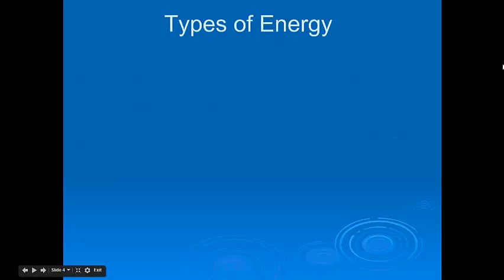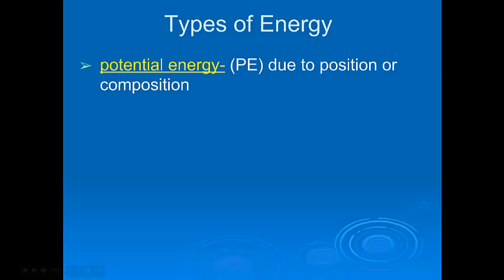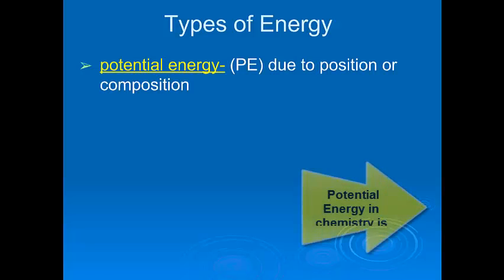There are several types of energy that we need to be aware of. The two that we're going to be most familiar with in this section are potential energy, represented by PE, and that is energy that's not being used. It's energy that's stored up, and it's due to position or composition. Where the object is, if it's very high off the ground, it would have a lot of potential energy.